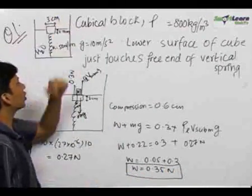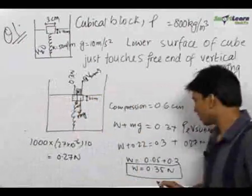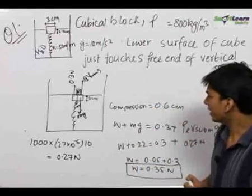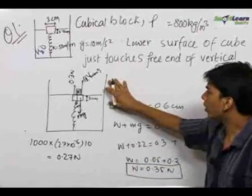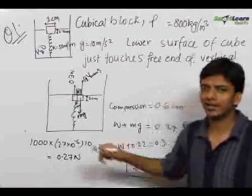So final answer becomes 0.05 plus 0.3, 0.35 newtons. So final answer for the weight that is maximum weight which can be kept on this block so that it just does not sink completely is equal to 0.35 newtons. In this question you should have remembered one thing that the submerged volume of the object can be found by the ratio of the density of the object and the liquid.